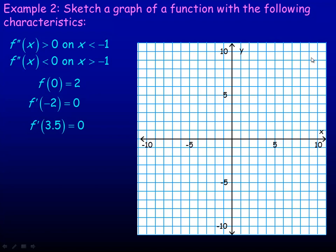One last example: in number 2 we're asked to sketch a graph of a function with the following characteristics. The second derivative is greater than 0 where x is less than negative 1, and the second derivative is less than 0 where x is greater than negative 1. We're also given that the first derivative is 0 at x equals negative 2 — so there's a horizontal tangent line there — and also at x equals 3.5, there's another horizontal tangent line.